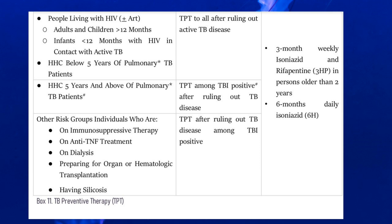For MDR contact, earlier we said wait and watch because we didn't have a regimen, but now you can give levofloxacin provided the contact is fluoroquinolone sensitive. If the contact is fluoroquinolone resistant, you cannot use levoflox and will have to wait and watch. For INH mono-poly resistance, it's 4 months of daily rifampicin. For INH dosing, remember it's 10 mg/kg/day but do not exceed 300 mg.